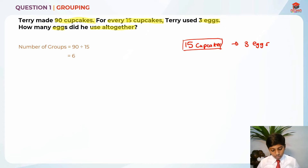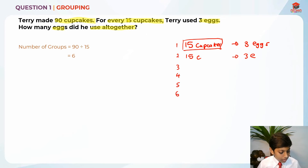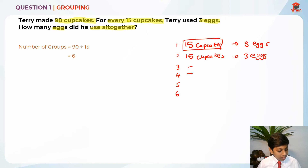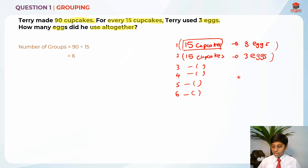So there are basically 6 groups. I'm going to draw 6 groups, each with 15 cupcakes and 3 eggs — so 1, 2, 3, 4, 5, 6 groups. In each group, there are 3 eggs. So in order to find how many eggs there are in 6 groups, I'm going to take 3 times 6. So the number of eggs is 6 times 3, which is 18. So 18 is the answer for question 1.